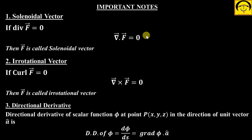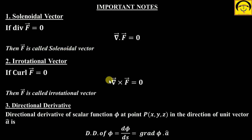Today in this video we are going to see questions based on solenoidal vector, irrotational vector, and directional derivative. A vector is solenoidal if its divergence is zero — that is, ∇·F = 0. If the curl (∇×F) is zero, then the vector F is called irrotational. For directional derivative of a scalar function φ, it is the gradient of φ dot the unit vector â.